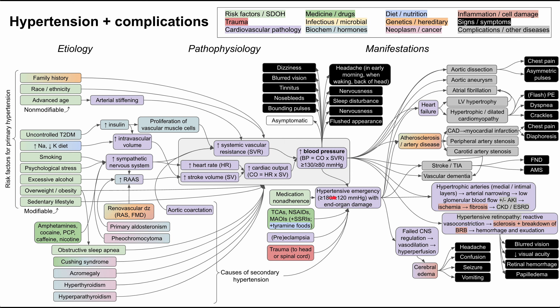Hypertensive emergency can again affect the kidneys, where an acute hypertensive crisis leads to acute kidney injury (AKI), whereas the chronic process leads to end-stage renal disease. The eyes can be affected as before with hypertensive retinopathy. Finally, when blood is pumped so fast through the vasculature it becomes turbulent, causing microangiopathic hemolytic anemia — with symptoms of fatigue and pallor as red blood cells are sheared as blood is pumped rapidly.